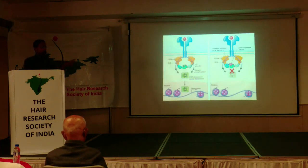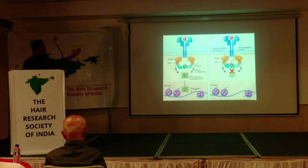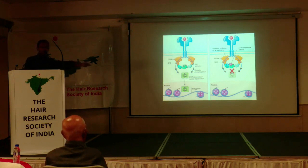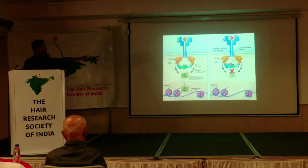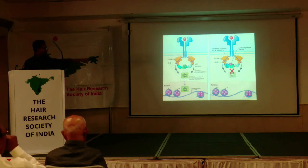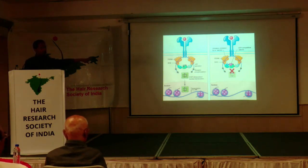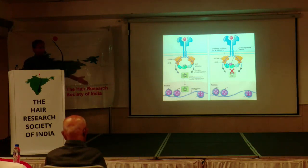Now this is what happens when you use JAK kinase inhibitors. On the left you can see the normal pathway — and remember, this pathway is overexpressed in alopecia areata, that's the problem. On the right-hand side, you can see that the JAK molecule actually binds with the receptors and prevents the STAT molecules from being phosphorylated, therefore preventing all the inflammatory cascade below that.